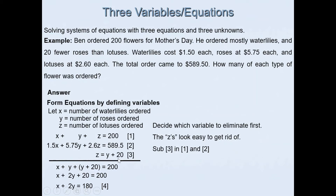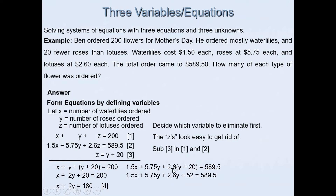Substituting z = y + 20 into the second equation: 1.5x + 5.75y + 2.6(y + 20) = 589.50. Expanding: 1.5x + 5.75y + 2.6y + 52 = 589.50. Combining like terms: 1.5x + 8.35y + 52 = 589.50. Subtracting 52 from both sides gives 1.5x + 8.35y = 537.50. This is our fifth equation.